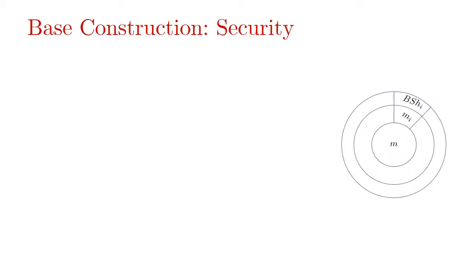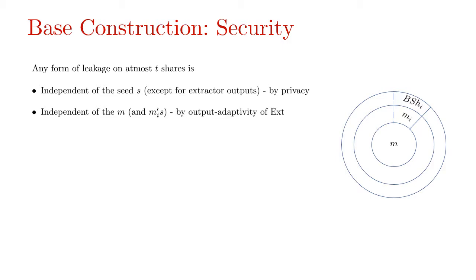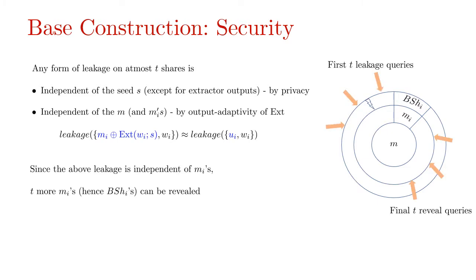To quickly see the security, any form of leakage on at most T shares is independent of the seed S except for the extractor outputs. This is by the privacy of the scheme sharing the seed S which further imply independence of the leakage from MIs and M. This follows by output adaptivity of the extractor which guarantees that leakage on the sources and the masked MIs is indistinguishable from leakage on the sources and the uniform strings. Now that the responses in the leakage phase are independent of MIs, the construction can afford to leak T new MIs and hence VSHIs.